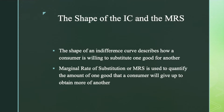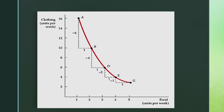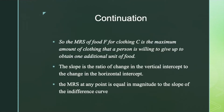With this in mind, let's move on to marginal rate of substitution. Marginal rate of substitution or MRS is used to quantify the amount of one good that a consumer will give up to obtain more of another. When the consumer is in the upper left portion of the IC, his willingness to sacrifice one good for the other will be more. This willingness will be less as he moves downwards to the right. The MRS measures the maximum amount of a good that a consumer is willing to give up in order to obtain one additional unit of another good. So the MRS of food F for clothing C is the maximum amount of clothing that a person is willing to give up to obtain one additional unit of food.